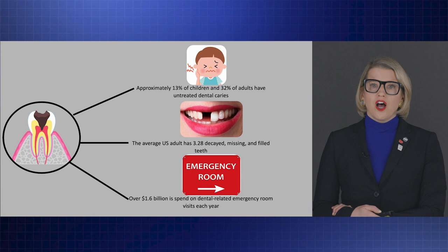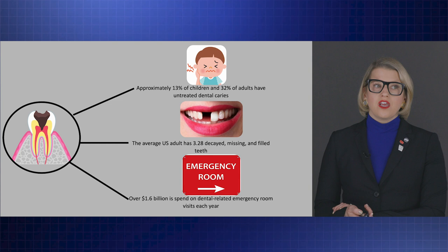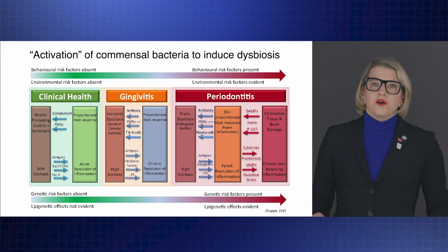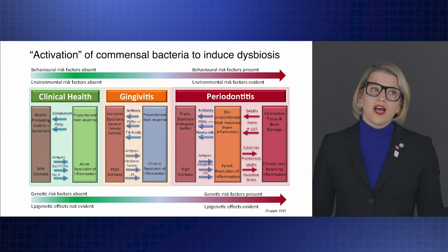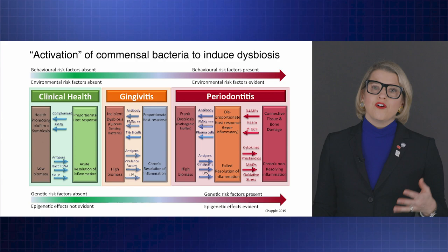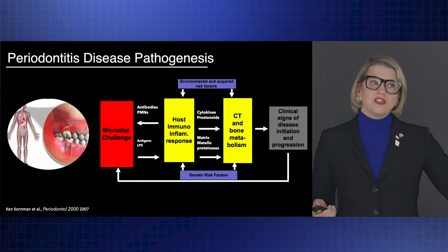Approximately 13% of children and 32% of adults have untreated dental caries, and that number is extremely impactful, particularly when we think about lost work, lost wages, lost schooling, and the overall impact on the population. When we think about how periodontal disease forms, we see the same type of transition: activation of commensal bacteria induces dysbiosis, which then progresses through gingivitis and eventually periodontitis for the vast majority of our patients. That really starts with the microbial challenge, and then destruction occurs with the host immunoinflammatory response as well.